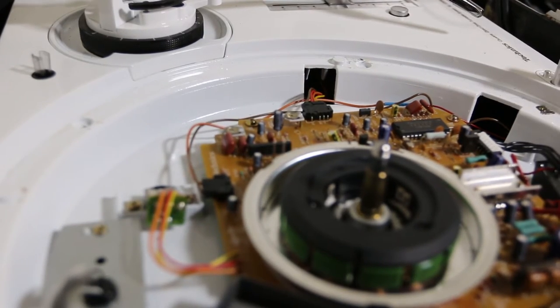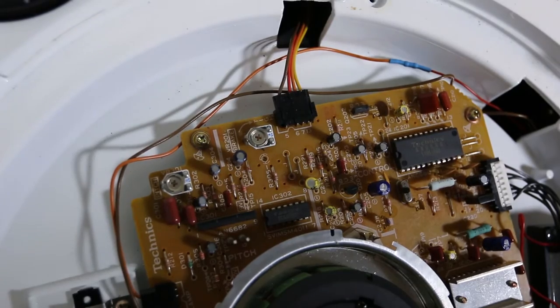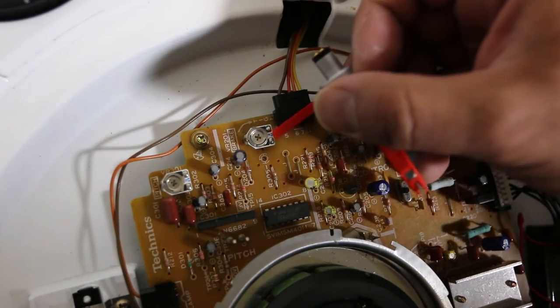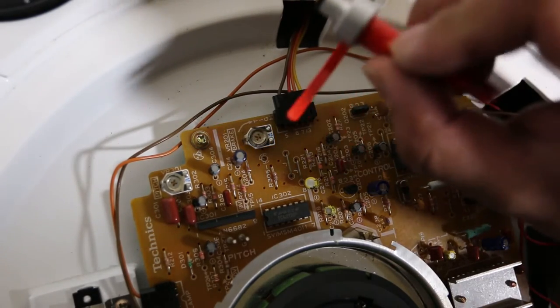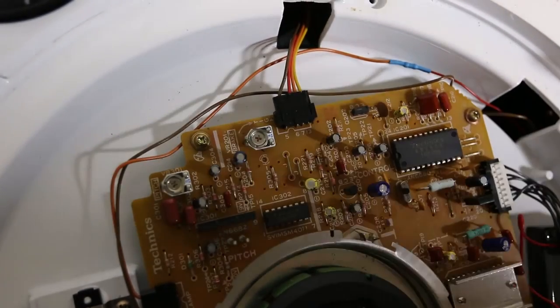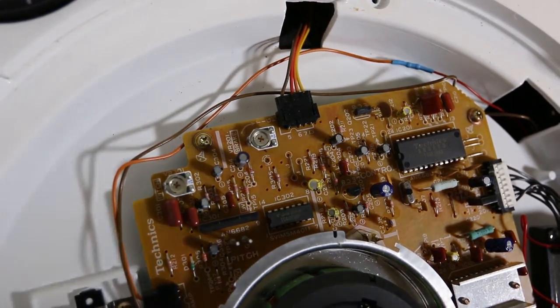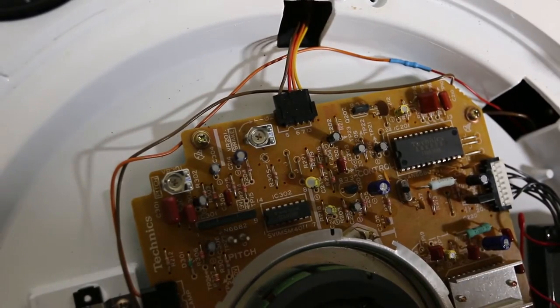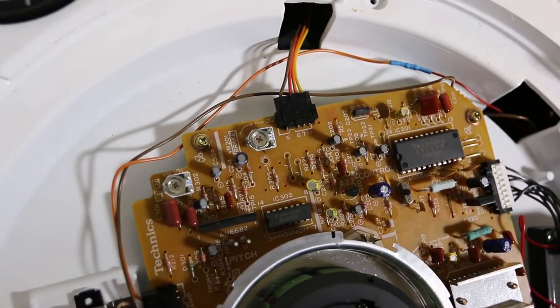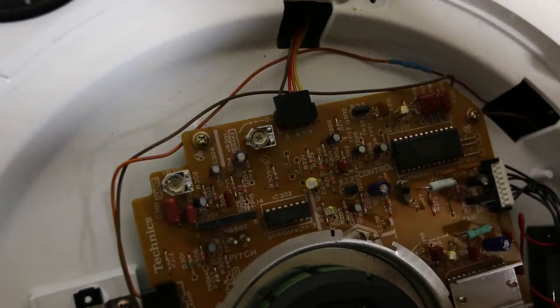This is the area that we want to worry about right here. It's actually labeled brake - in this case it's VR 201, and VR is variable resistor. R is resistor, C is capacitor, IC is integrated circuit, just to give you an idea of what you're looking at.